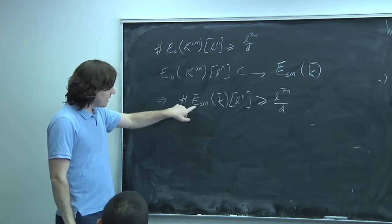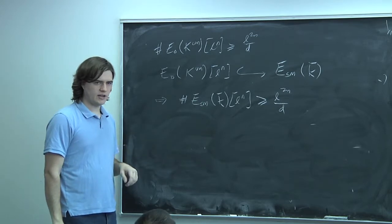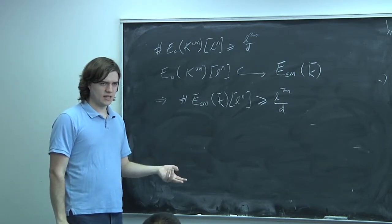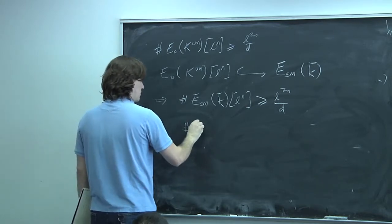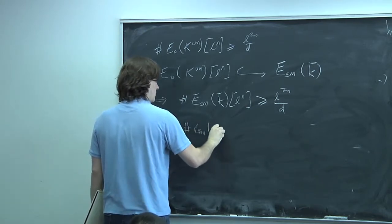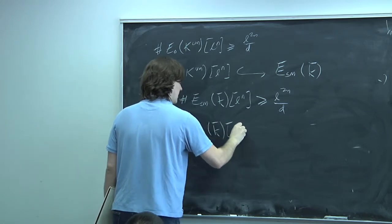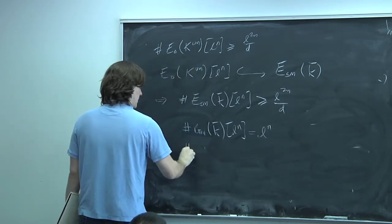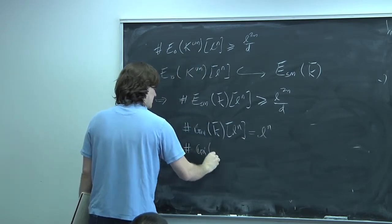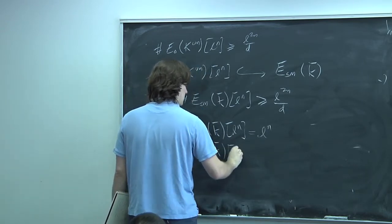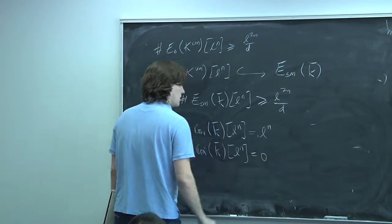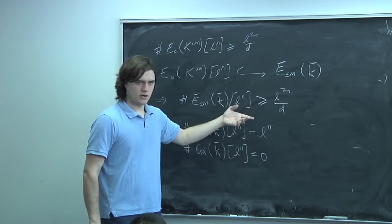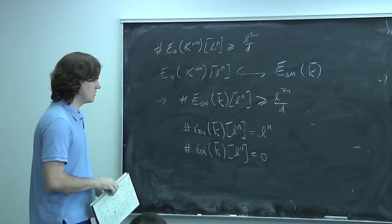Now the ℓⁿ-torsion of Ē_sm downstairs grows much faster than ℓⁿ if Ē_sm = 𝔾_m, and the ℓⁿ-torsion of 𝔾_a is zero. This is growing at rate ℓ^{2n}, which rules out 𝔾_a and 𝔾_m. So Ē_sm must be an elliptic curve — meaning E has good reduction.